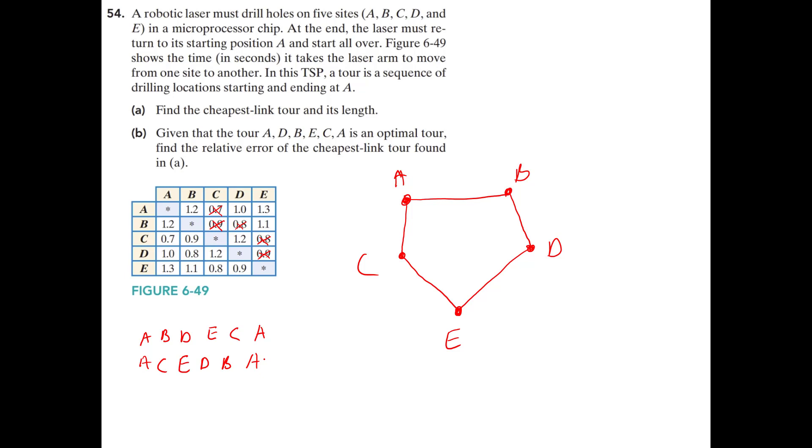Find the cheapest link tour and its length. Okay? So A to B was 1.2. B to D was 0.8. D to E was 0.9. E to C was 0.8. And C to A was 0.7. So the cheapest link tour is given there. If we add up the weight of all the edges for that tour, we will get a total time of 4.4 seconds.